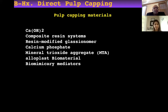Let's look at what has been used in the past and currently for pulp capping materials: calcium hydroxide, composites, resin-modified glass ionomer, calcium phosphate, MTA, alloplast materials, and biomimetic mediators.